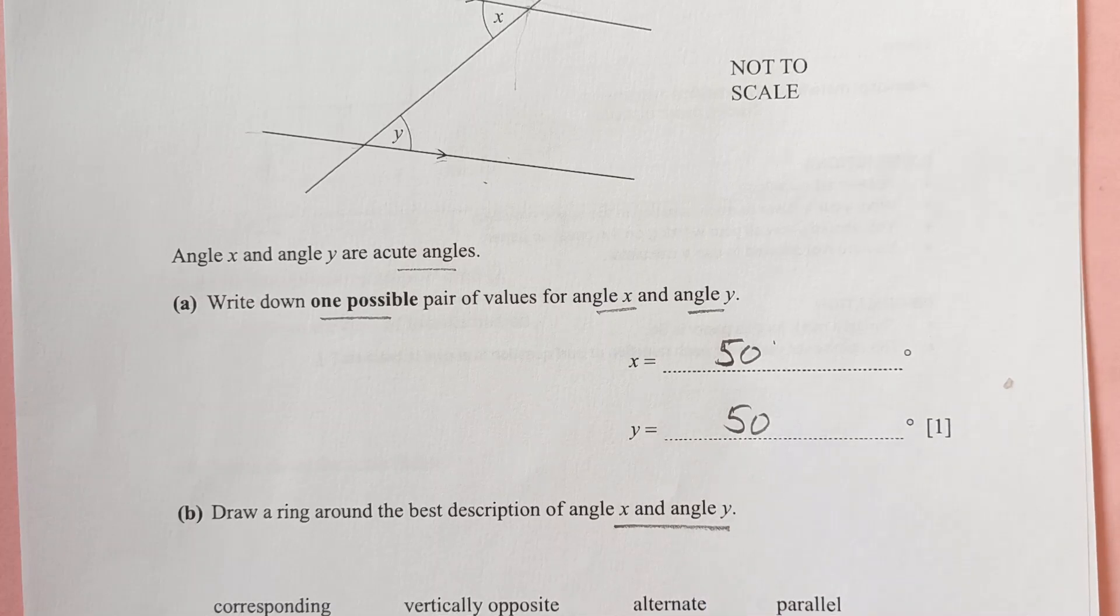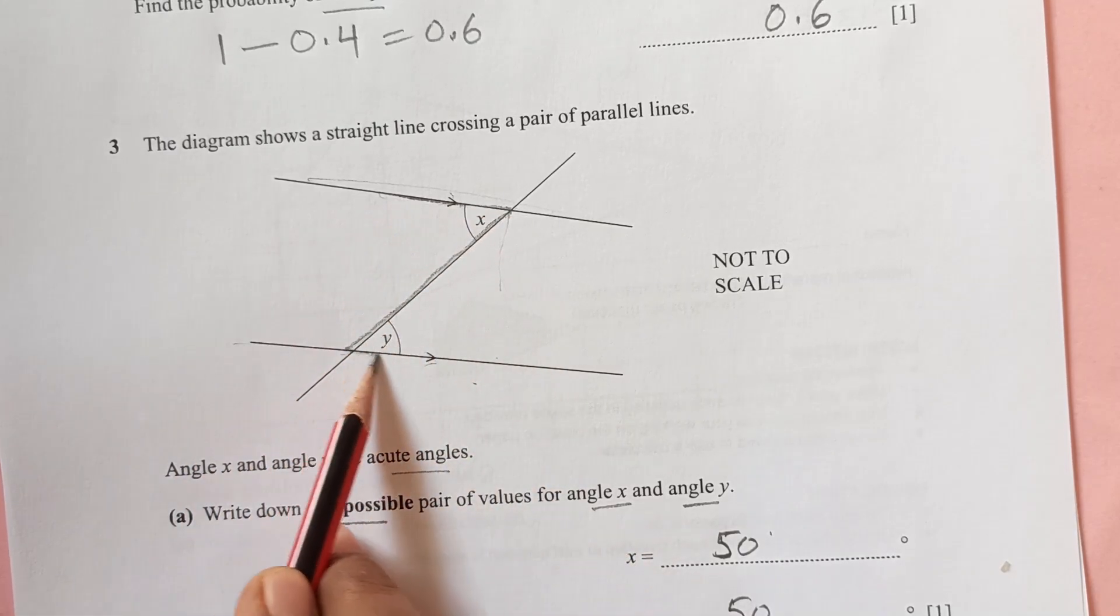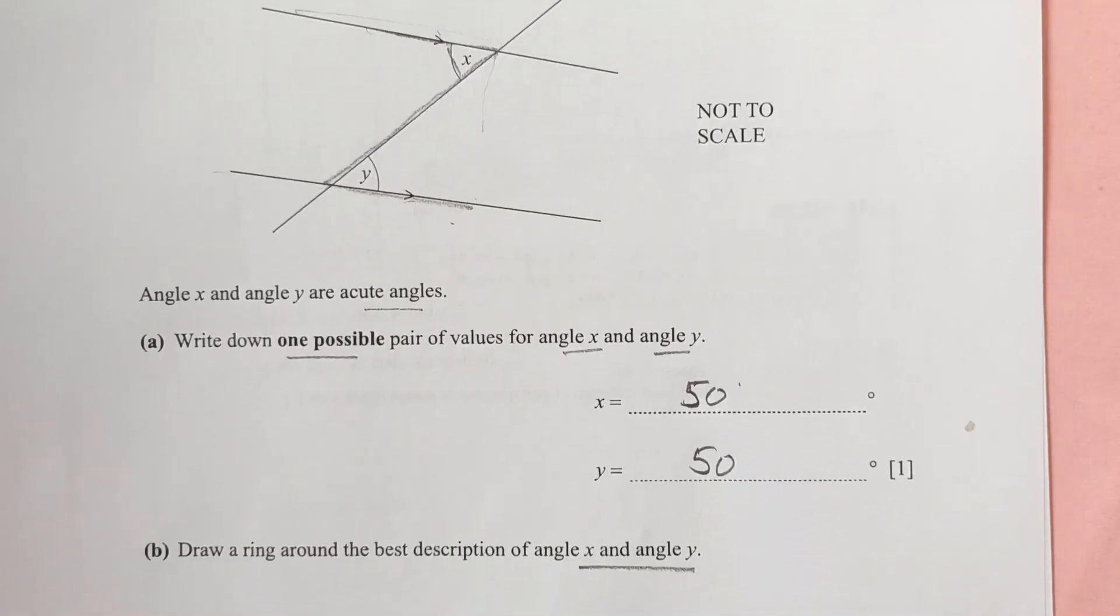Now draw a ring around the best description of x and y. Angles x and y are alternate angles because when you see the Z shape like this, one is on this side, another one there, then these are alternate angles.